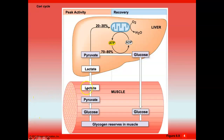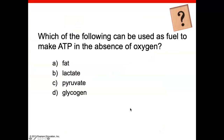This diagram shows the Cori cycle, where after intense activity we produce lactate anaerobically. The lactate enters the bloodstream, goes back to the liver, and is converted back to glucose in the Cori cycle. That glucose can go in the bloodstream and return to the muscle for storage or be used for energy.